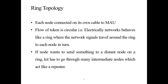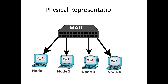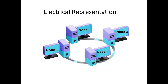In ring topology, each node is connected to a multi-station access unit through its own cable. If you see the structure of ring topology, it looks like this — there is a multi-station access unit, written here as MAU, and all these nodes are connected to the multi-station access unit through this cable. This is the physical representation.